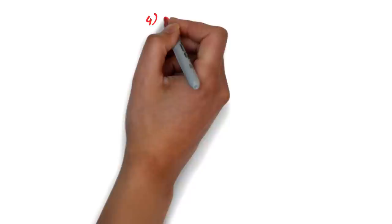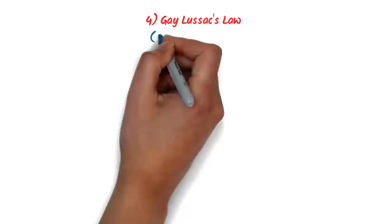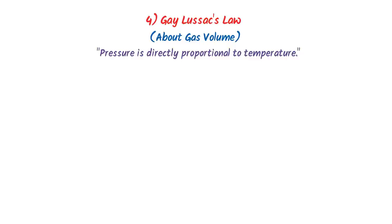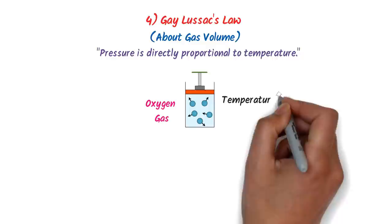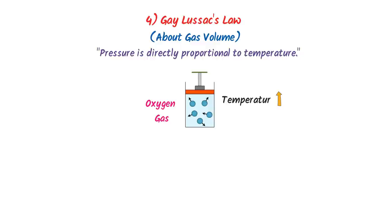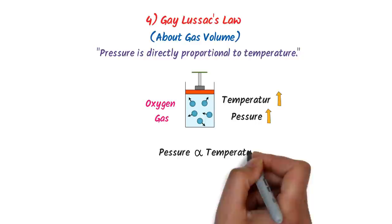The fourth law is Gay-Lussac's law, based on the volume of gases. It states that pressure is directly proportional to temperature. For example, if we increase the temperature of oxygen gas in a cylinder, the rate of collision of oxygen molecules on the wall increases, and as a result, pressure increases.